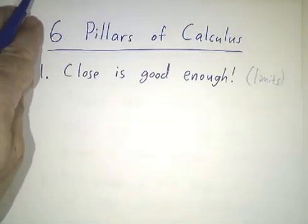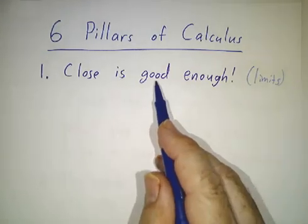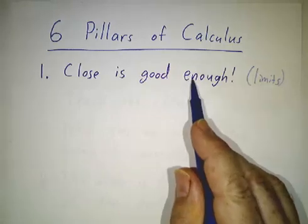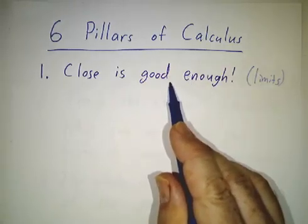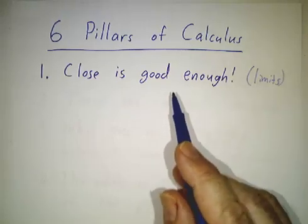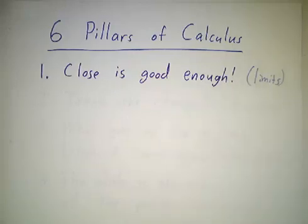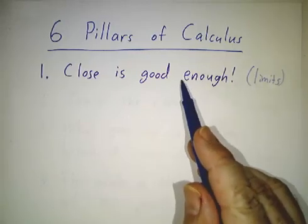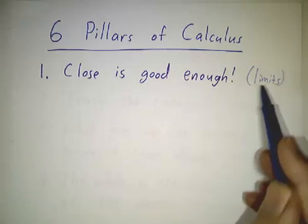The first big idea I call close is good enough. In algebra, you look for exact answers. In calculus, you make approximations. You do an approximation, you get an approximate answer, and then you refine it. You make a better approximation and a better approximation until you have enough accuracy for whatever problem you're trying to solve. If you want an infinitely accurate answer, you take the limit of better and better and better approximations.